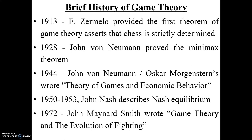In 1944, John von Neumann and Oskar Morgenstern wrote 'Theory of Games and Economic Behavior.' From 1950 to 1953, John Nash described the Nash equilibrium. In 1972, John Maynard Smith wrote 'Game Theory and the Evolution of Fighting.'